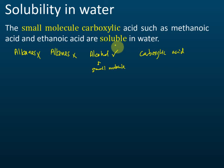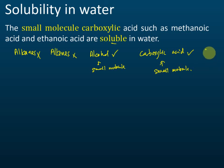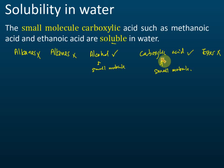Carboxylic acids — also soluble, but again only for small molecules. Esters are insoluble. So: alkanes, alkenes, and esters are insoluble; alcohols and carboxylic acids are soluble if the molecule is small — like methanol, ethanol, propanol, or methanoic acid, ethanoic acid, propanoic acid. That covers the solubility of five homologous series needed for SPM.